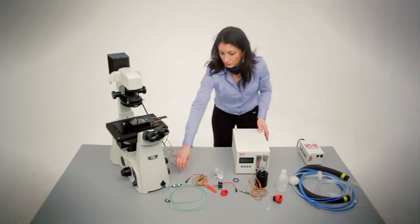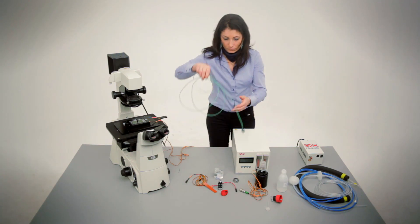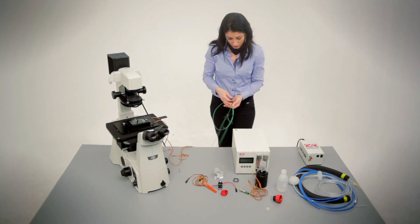A simple manual calibration of the objective heater can be performed by connecting the external temperature sensor to the UNO controller.